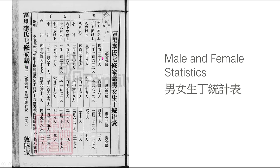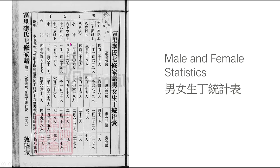Now, this doesn't mean this first wife had this many children — this simply means from this side of the family, from the lineage of the first wife, this is across many generations up to the seventh edition of the Jiapu. From the middle line: to the right is the number of males, and to the left is the number of females.